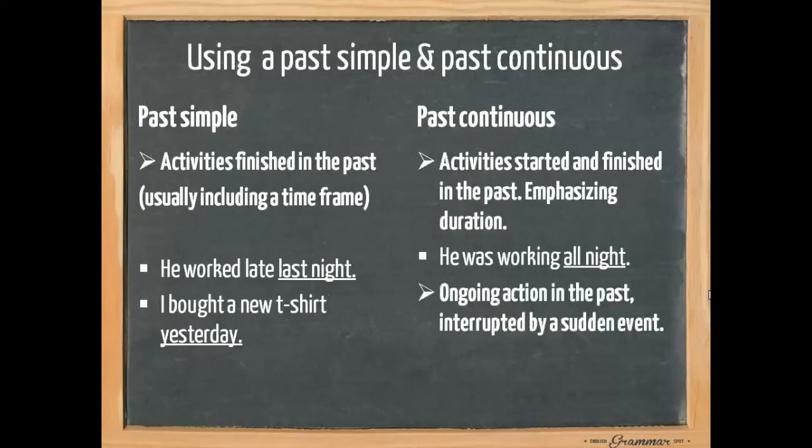We also use a past continuous for an ongoing action in the past interrupted by a sudden event. For example, I was buying a t-shirt when I ran into her. So I was doing something and then suddenly a friend came up to me.